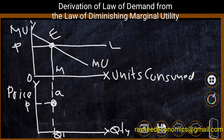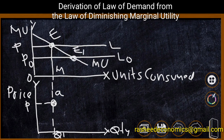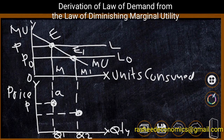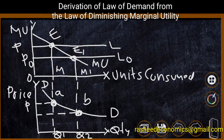Now, suppose the price of the commodity decreases from P to P0. When price decreases, the equilibrium point shifts to E1, and automatically the consumption of the commodity increases to M1. Corresponding to M1, we can derive a point in the lower segment — that is Q2. We can also plot the new price P0 in the lower segment and derive another point, point B. By joining points A and B, we can derive the law of demand or demand curve. This demand curve DD is downward sloping, showing that when price decreases from P to P0, quantity demanded extends from Q1 to Q2.